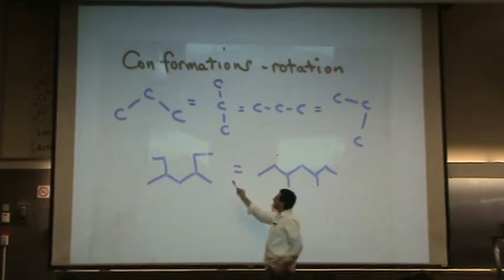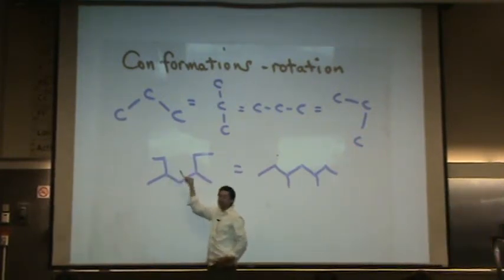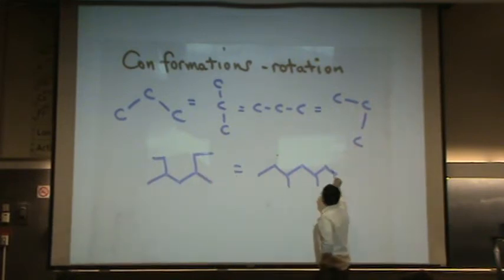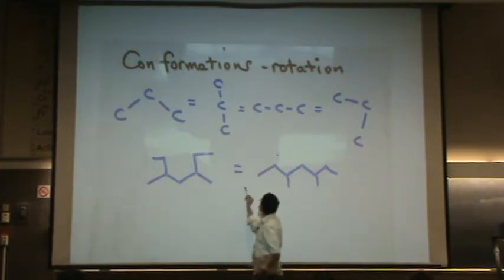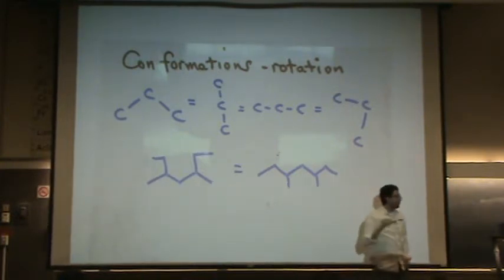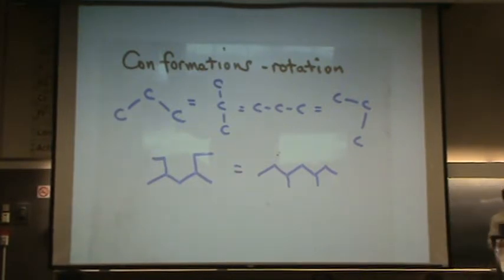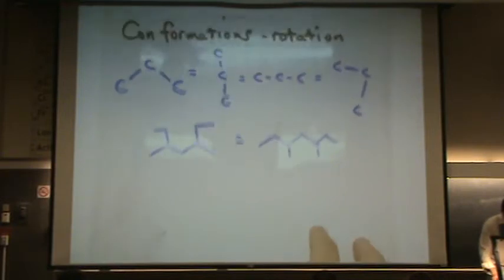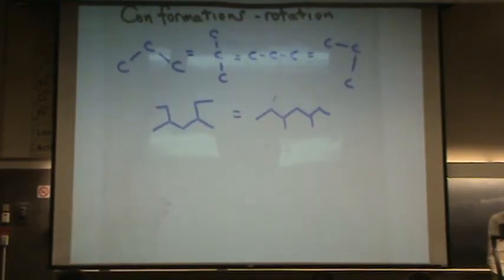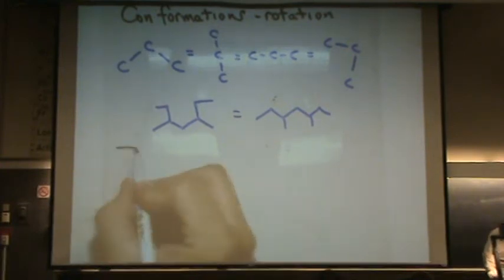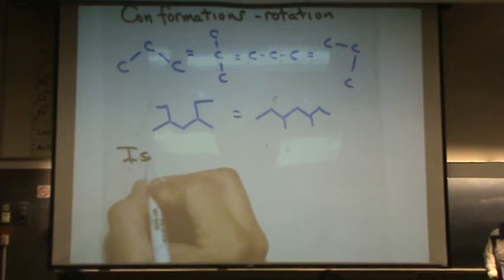Here I drew the main chain just kind of wiggly. And here I drew it just straight up, zigzagging, straight across the page with these two methyl groups now pointing downwards. So those are conformers of each other. Those are equivalent structures. And when you take the big time OCHEM, if you do, you'll get more craziness than this. But that's just to show you that you can draw different ways.